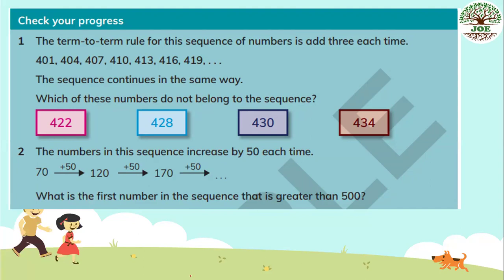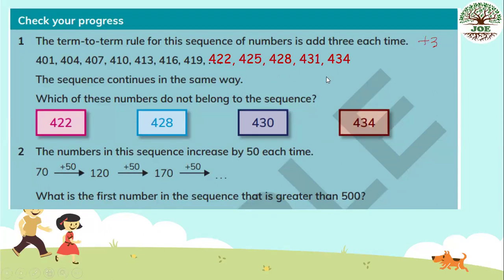The term-to-term rule for this sequence of numbers is add 3 each time. The sequence continues in the same way, and we have to find which of these numbers do not belong to the sequence. So we have to find some more terms: 422, 425, 428, 431, 434.